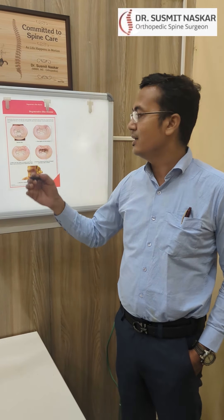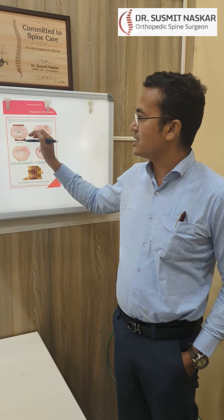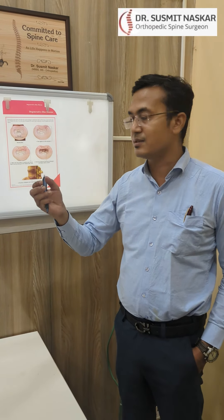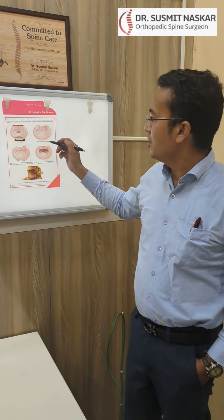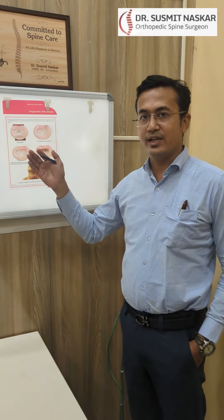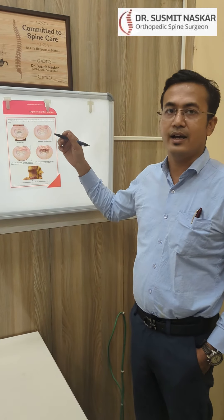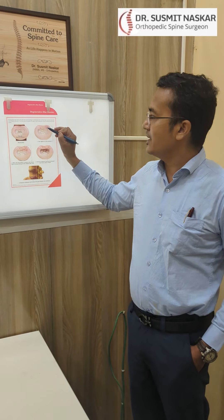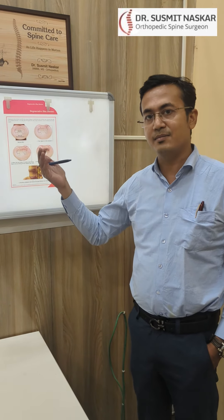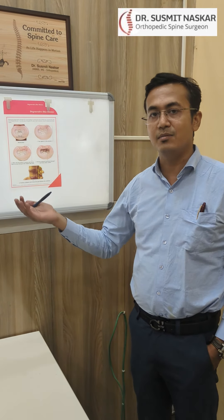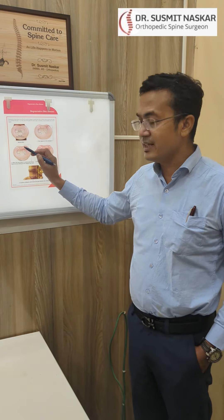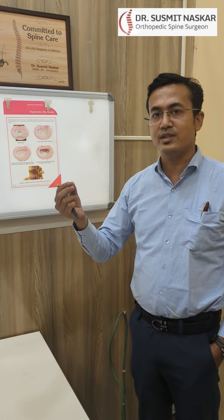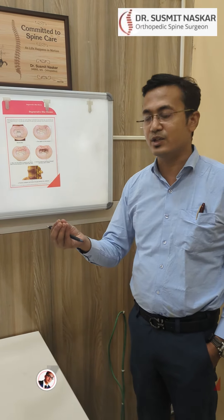When you are young, this nucleus pulposus contains a lot of water — it remains tight and flexible. But as age progresses, there is wear and tear around the annulus fibrosus. After tearing, this annulus fibrosus can sometimes heal by itself, but it is healed by scar tissue. Scar tissue is never as strong as the original tissue.